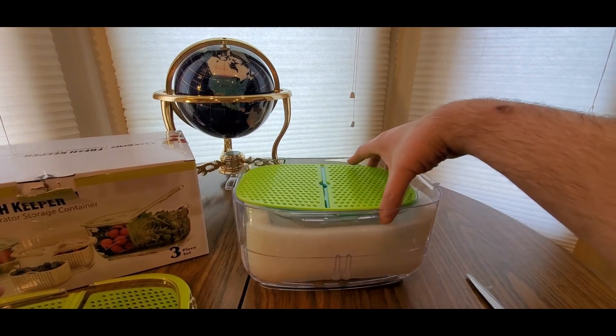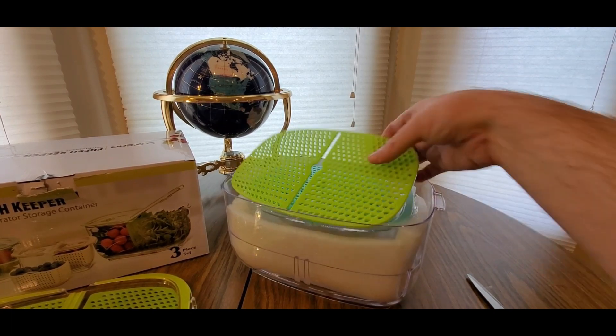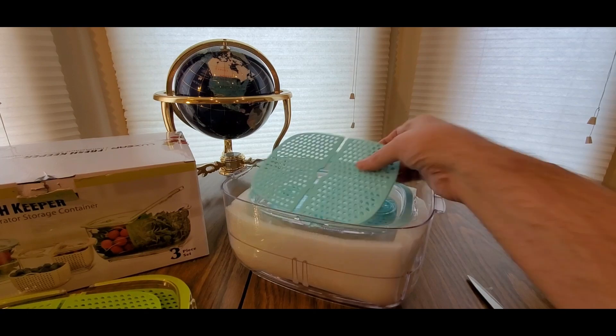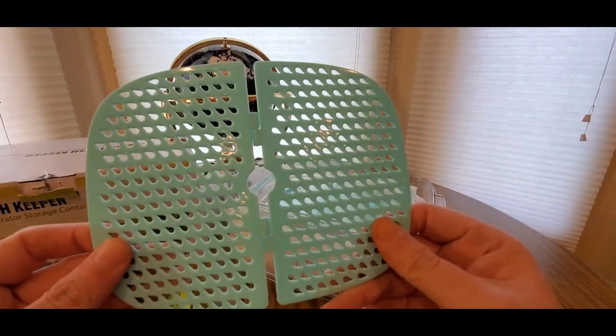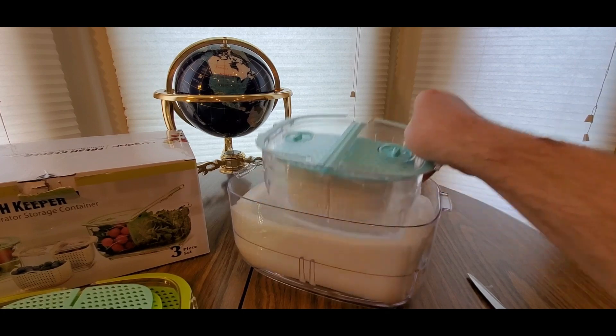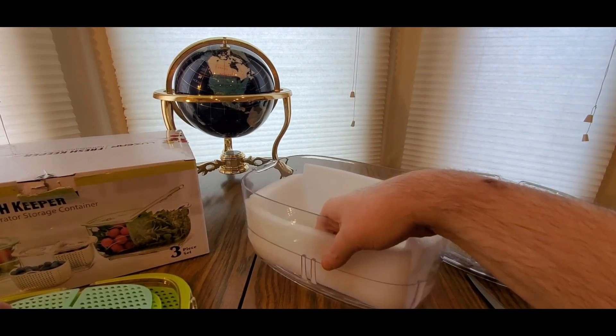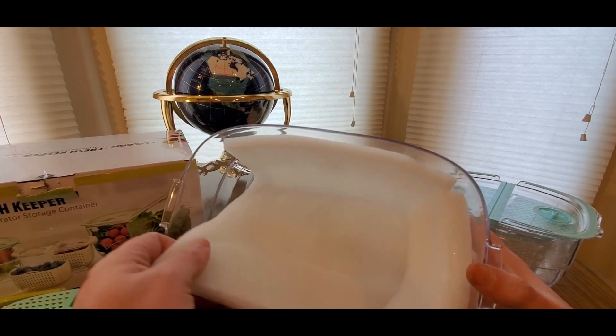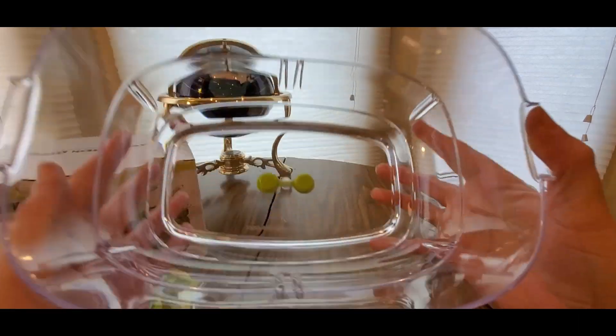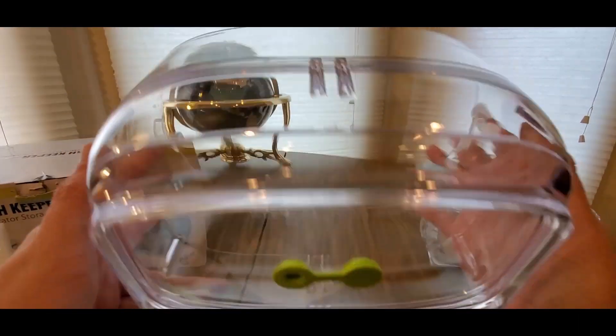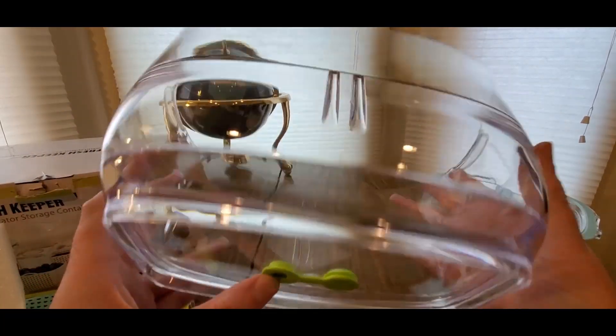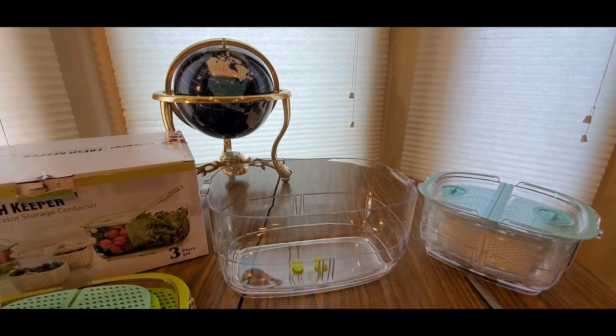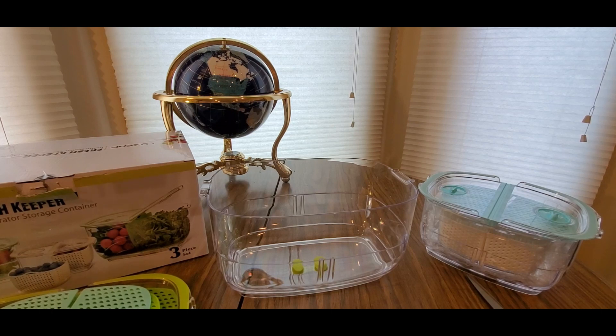Got another one of these guys. So this is a three piece set, and then we got the turquoise. And now the main, so this is probably for your salad, stuff like that. Look how clear that is. There's a drainer.